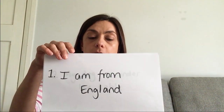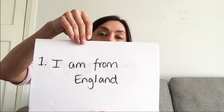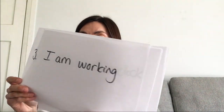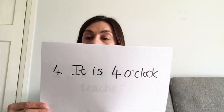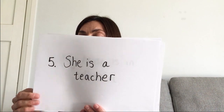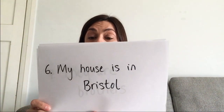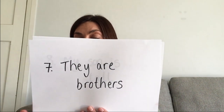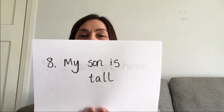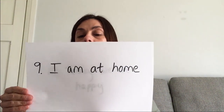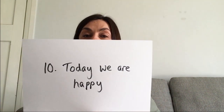I'm just going to show you the sentences: 'I am from England.' 'My dog is under the table.' 'I am working.' 'It is four o'clock.' 'She is a teacher.' 'My house is in Bristol.' 'They are brothers.' 'My son is tall.' 'I am at home.' And 'today we are happy.'